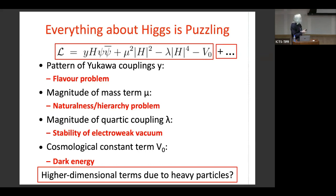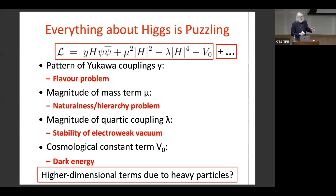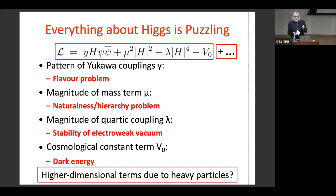Why do I say that everything about the Higgs is puzzling? Here are the terms in the standard model Lagrangian involving the Higgs boson. The first is the Yukawa coupling, which varies over many orders of magnitude. There's also mixing between quarks in the weak interactions and we have no idea where that hierarchy originates — we can parameterize it, but have no fundamental theoretical understanding. The second term is the Higgs mass term: it's crucial that it have a negative sign and be relatively small compared with the scale of gravity, which the standard model doesn't explain — this is the naturalness or hierarchy problem.